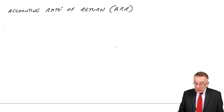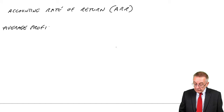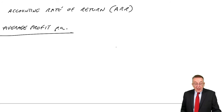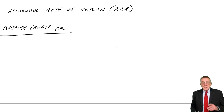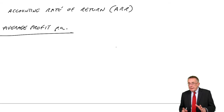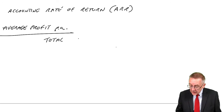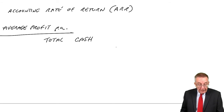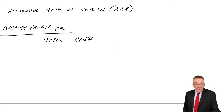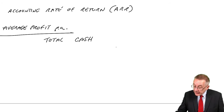First of all, let's work out the average profit per year. We're told what the cash flows are each year, and so the total operating cash flow is 20, 30, 40, 10 — a total of 100,000.